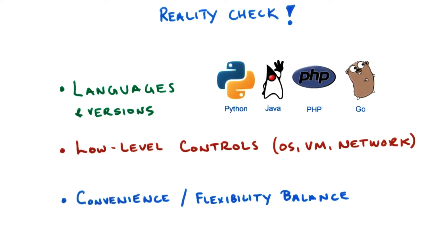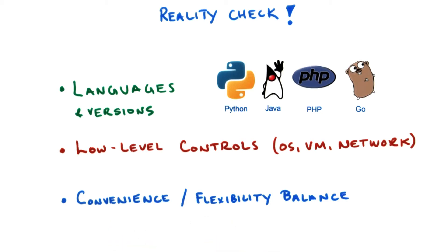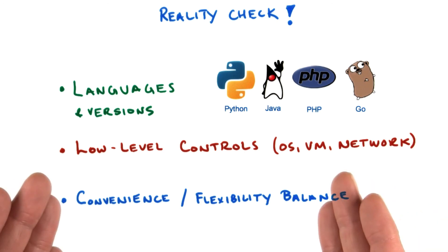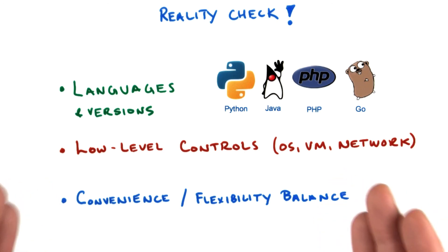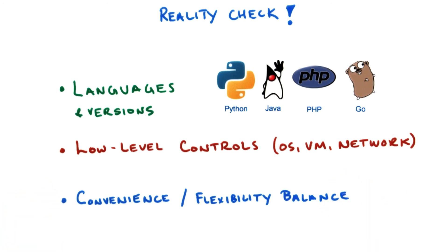App Engine strikes a great balance between providing the convenience you need to develop scalable applications without sacrificing the flexibility that you want. But with this in mind, don't be surprised later on when you see that App Engine is not like a regular virtual machine, because it's not. All right, that's it for the reality check. Let's now look at some App Engine success stories.